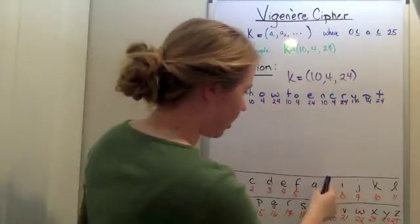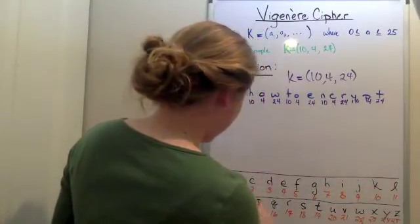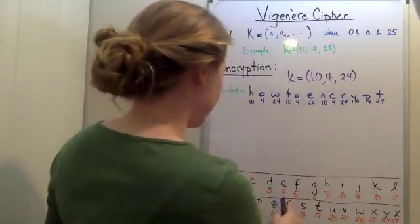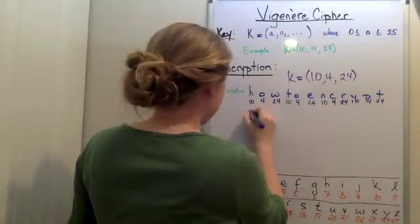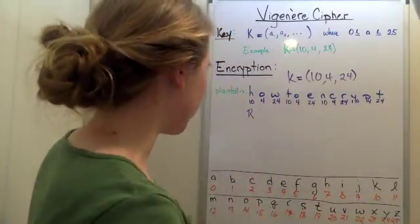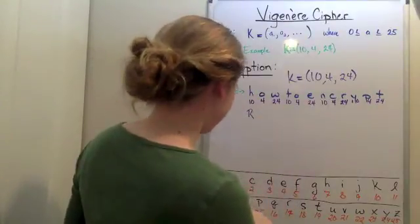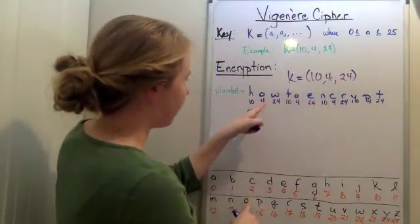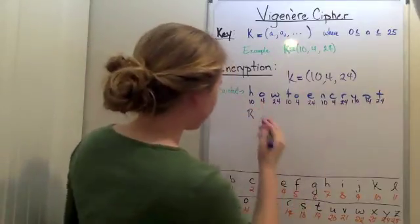So I'm going to add 10 to H. We start out at H and count 1, 2, 3, 4, 5, 6, 7, 8, 9, 10, and we end up with R. So I'm going to put R right here. H goes to R. Now we do the next letter, O. Where's O? O is right here. We want to add 4, our key number: 1, 2, 3, 4. We end up with S.